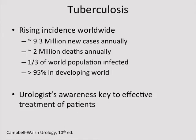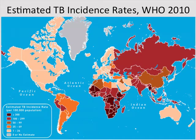Tuberculosis incidence is rising worldwide, accounting for about 2 million deaths every year. It's estimated that a third of the world's population are infected, the majority of which are in the developing world. Urologist awareness is important to diagnose this early — it needs to be in our differential diagnosis. A 2010 world map shows relatively lower rates in North America, but fairly high rates in Africa, Asia, and South America, and with travel and immigration, this impacts the patients we see.